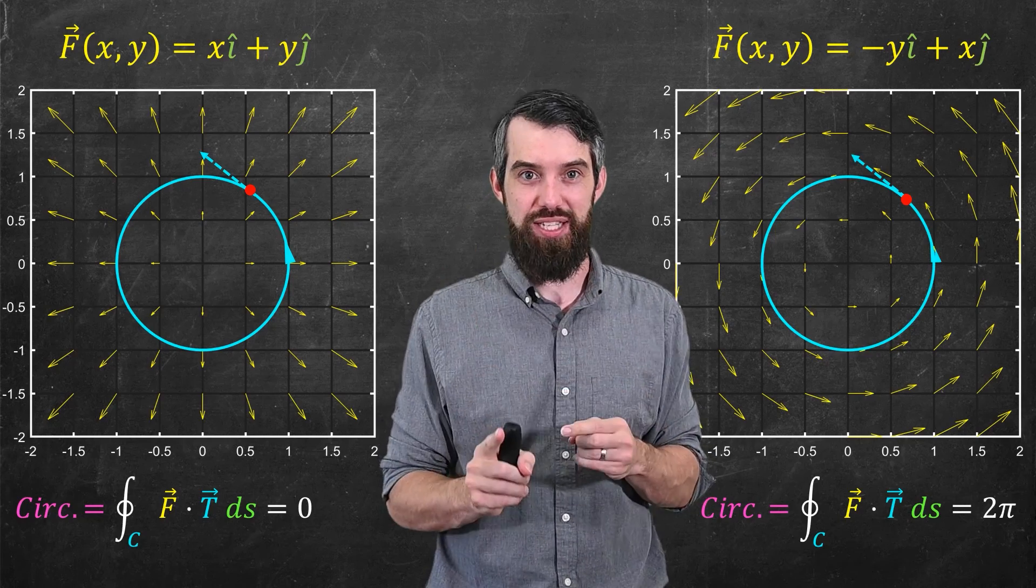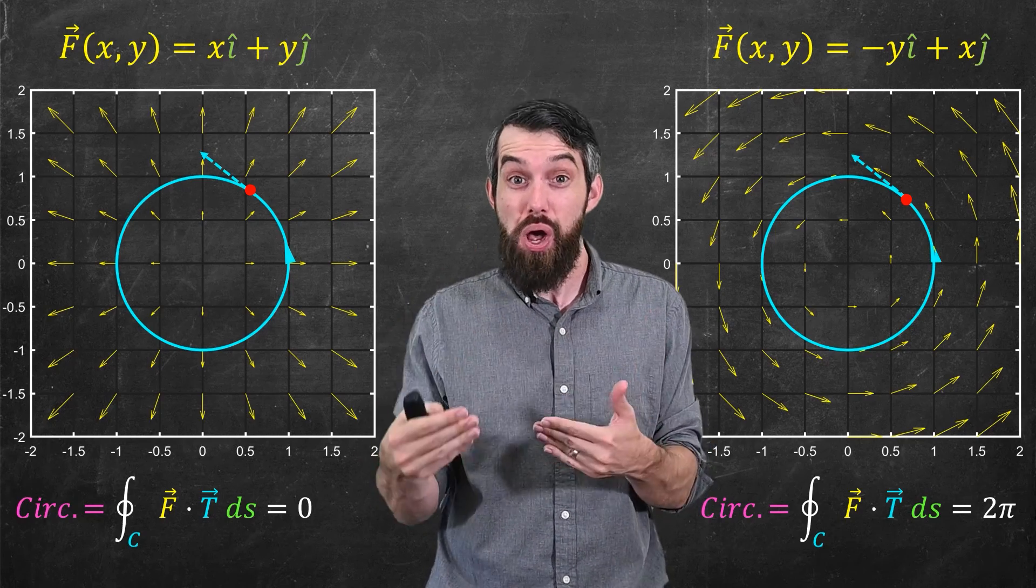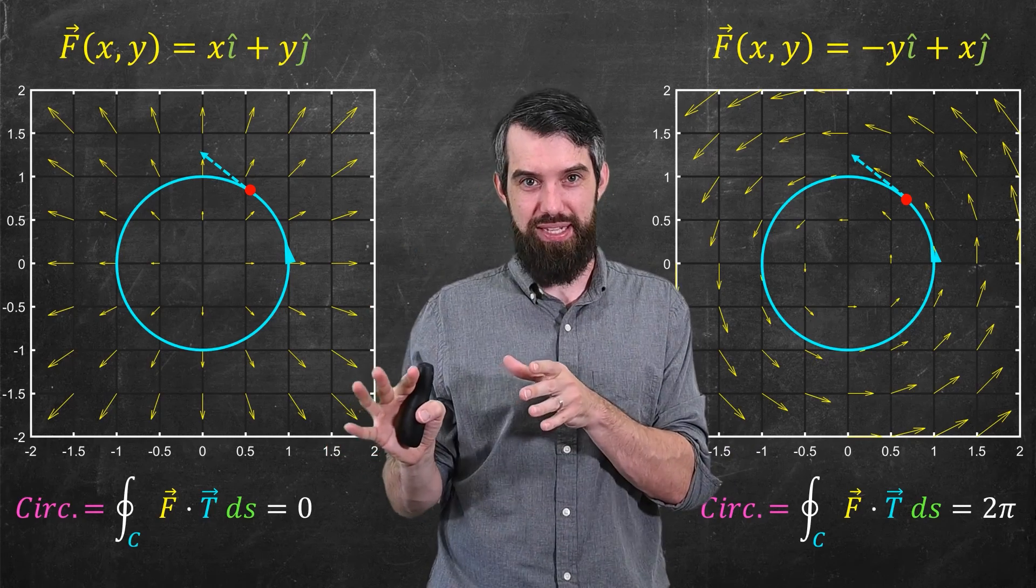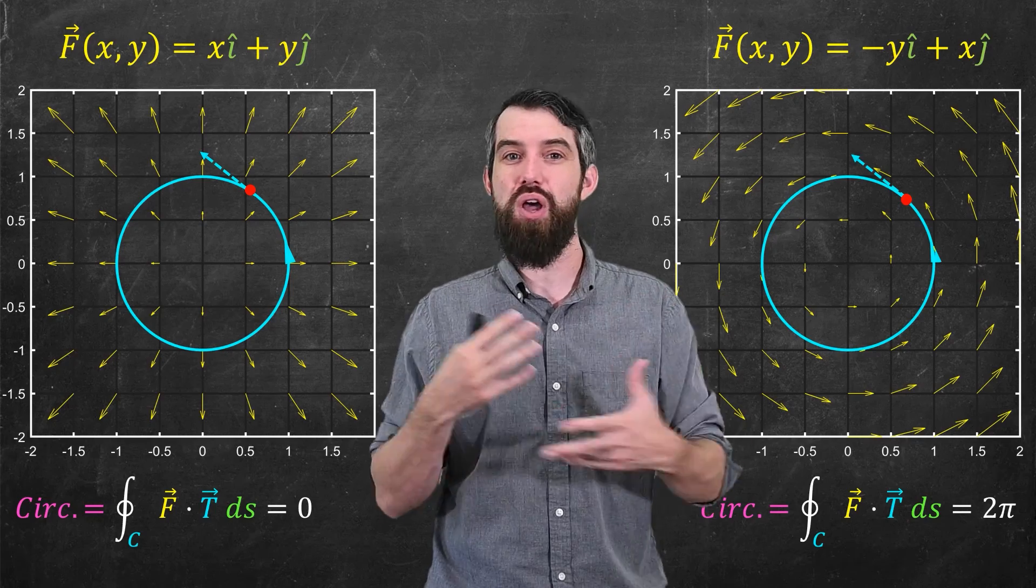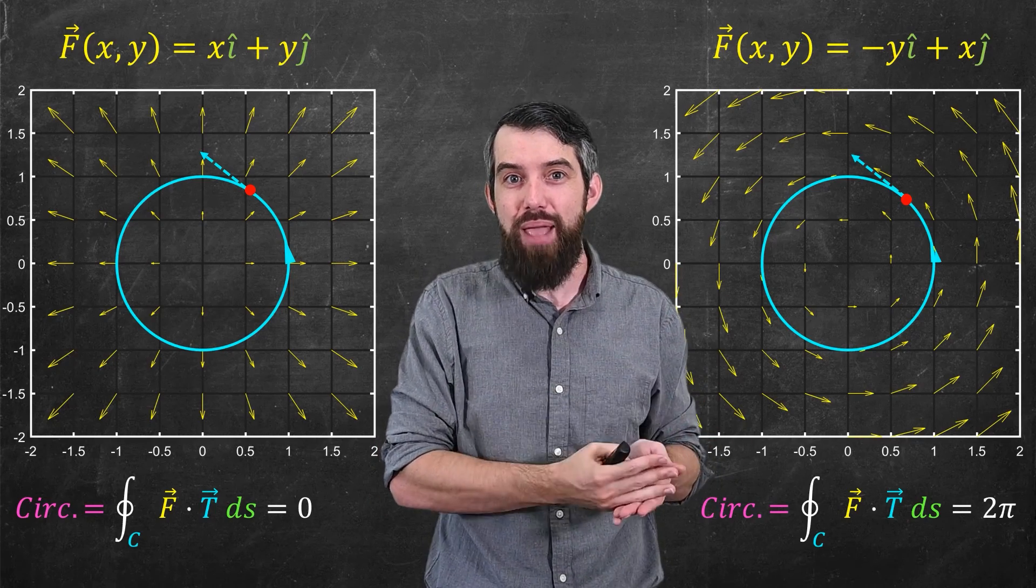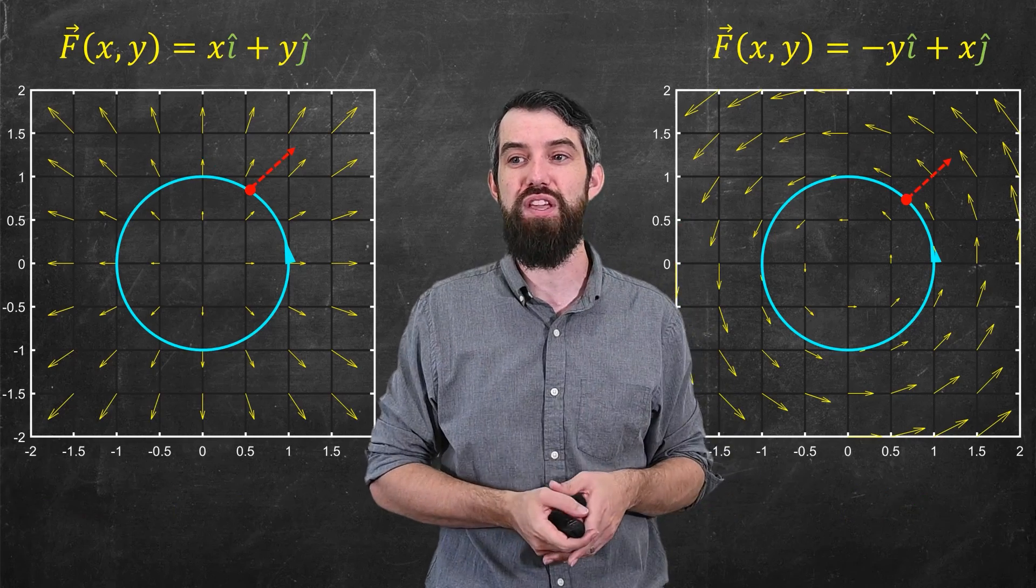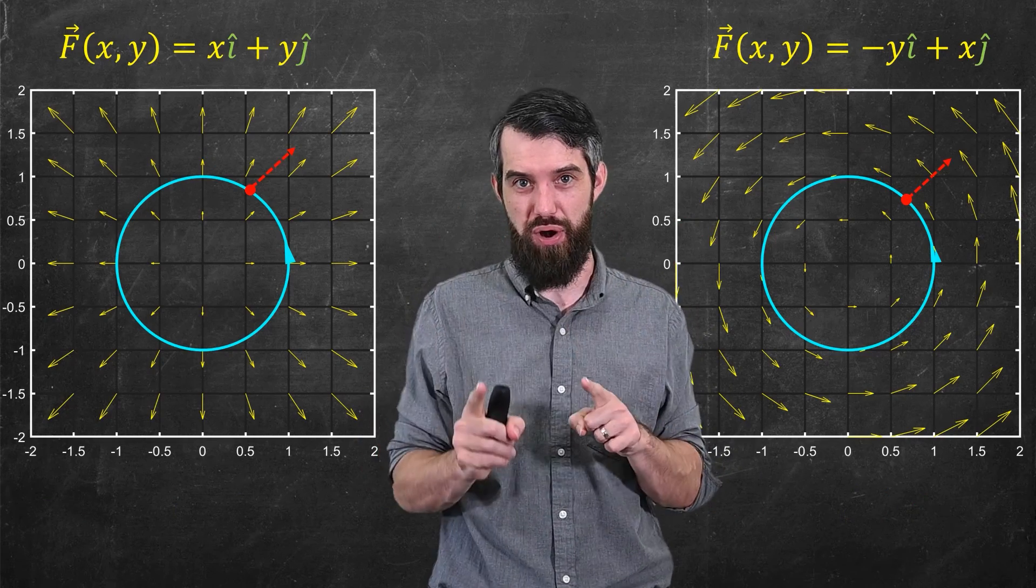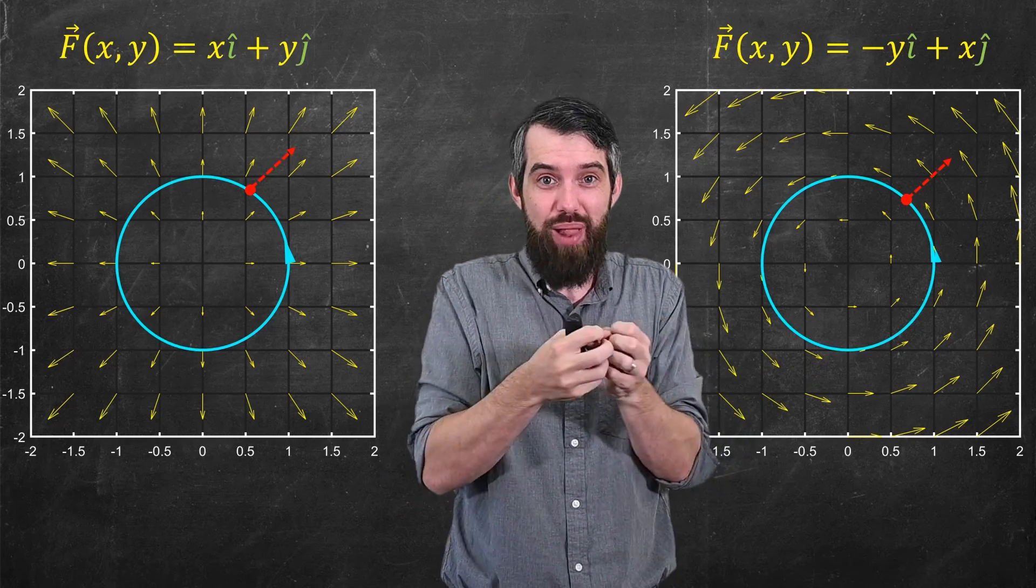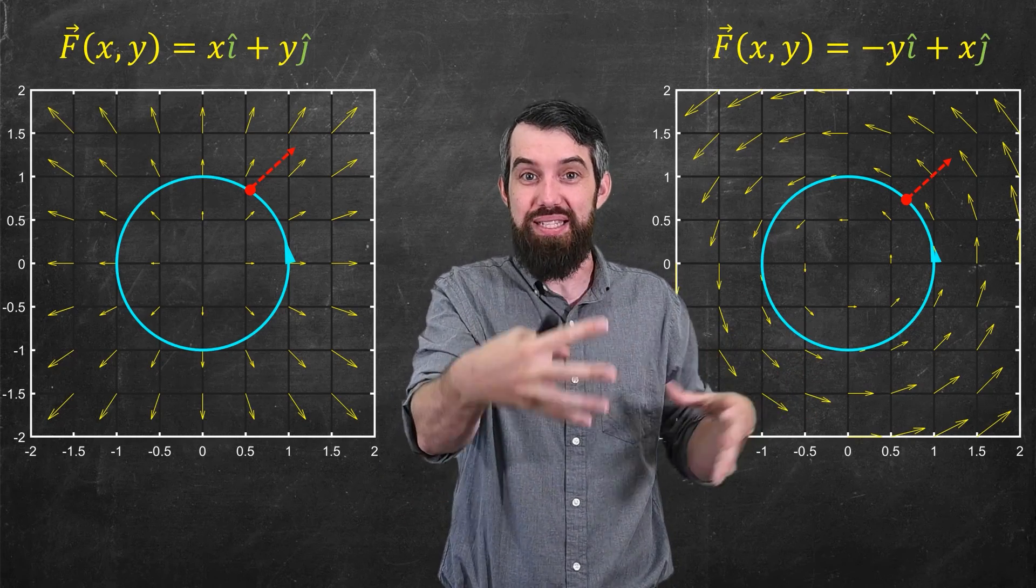But now we want to change things up. Now we're going to move to the new concept of flux. And flux is the sort of exact opposite of this. Flux says I don't care about the contribution of the field that is tangential to the curve. I'm interested instead in the proportion of the field that is normal to the curve. One way I like to think about this is imagining that my circle is a net and I'm asking how much water is going to flow across this net.